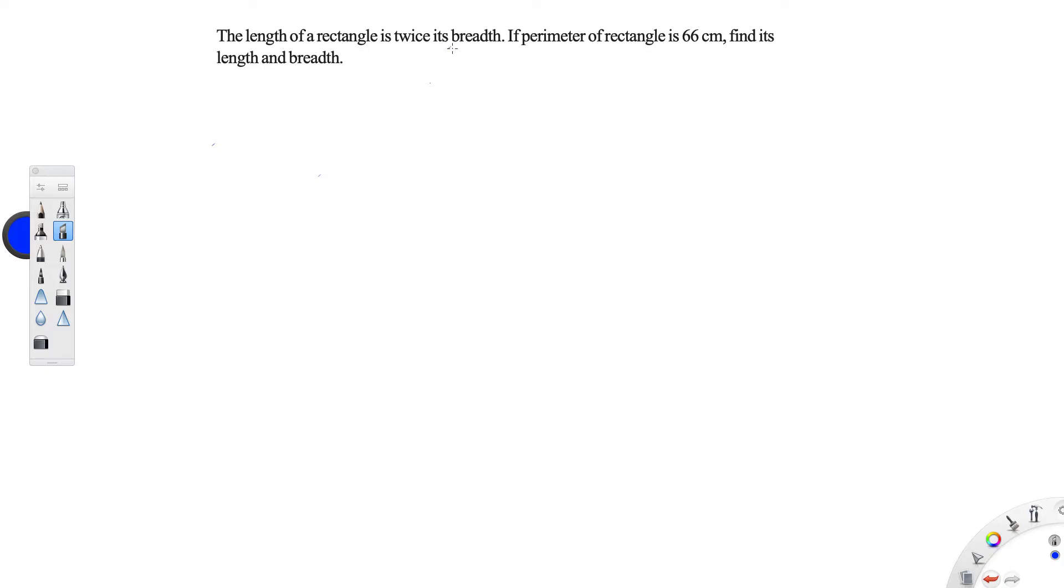The length of the rectangle is twice its breadth. If the perimeter of the rectangle is 66 cm, find its length and breadth. It is a very easy sum.